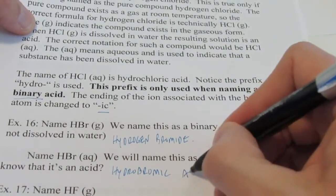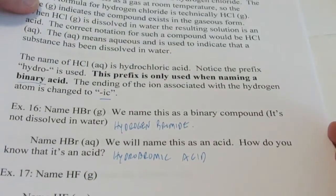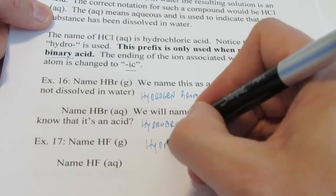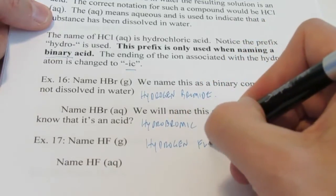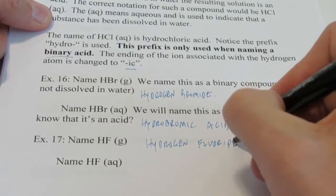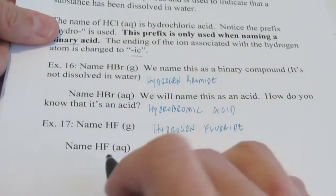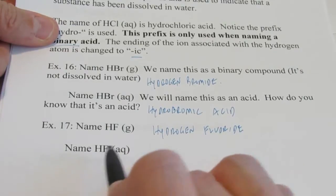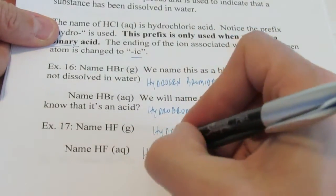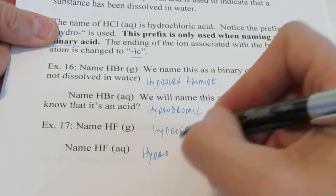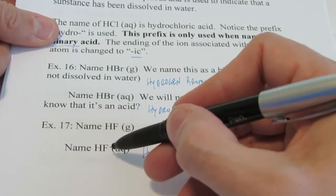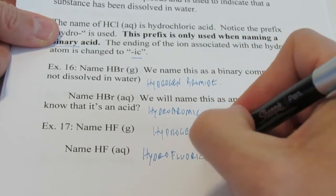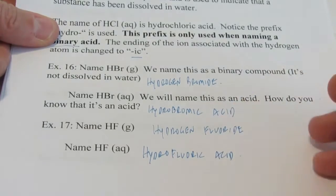So bromine becomes bromic, and then we add acid — hydrobromic acid. HF(g) would be hydrogen fluoride, just like we named our covalent compounds. However, if I dissolve that in water, I notice it's an acid — it starts with H and it's dissolved in water. So it would be hydro-, and then I take the ion associated with the hydrogen and end its name with -ic. So: hydrofluoric acid.